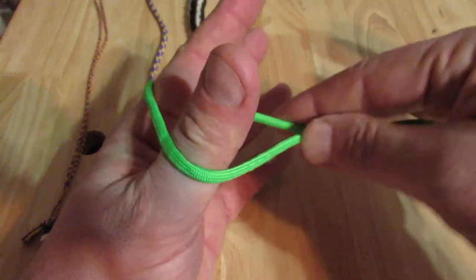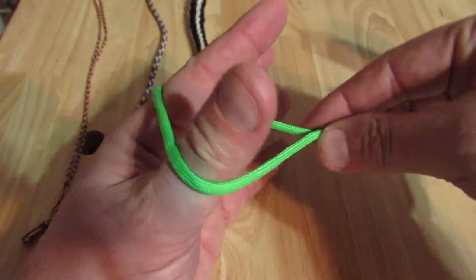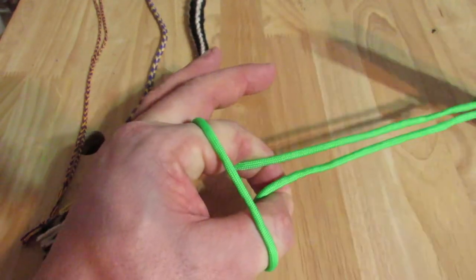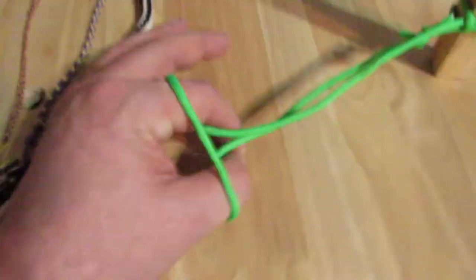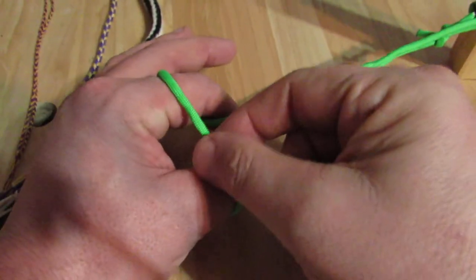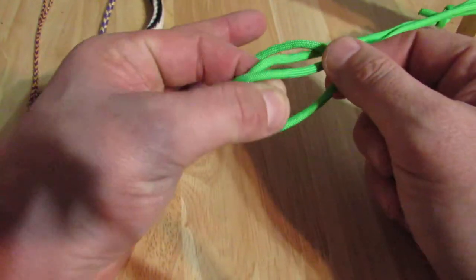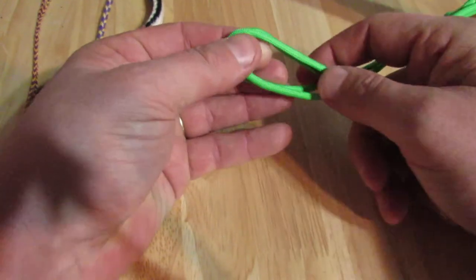Sometimes people like to kind of pinch this over here to make it easier, but all you're going to do is reach down and around, pinch your fingers together, and then pull this down together until you have this loop piece.